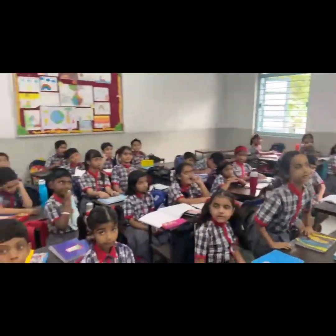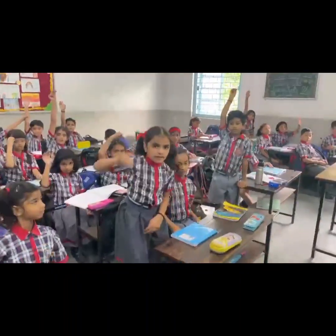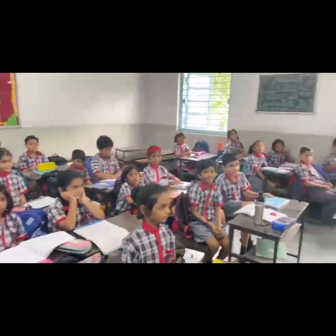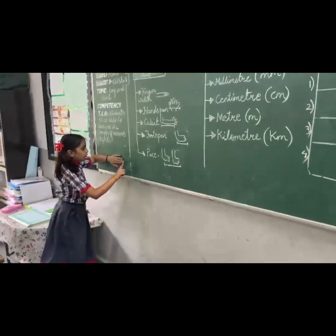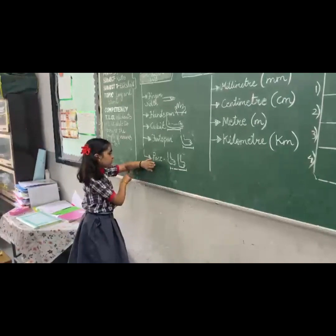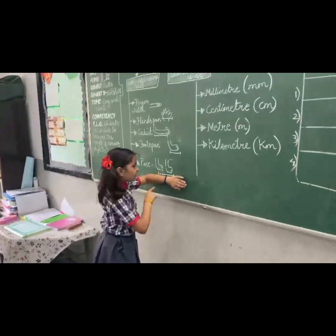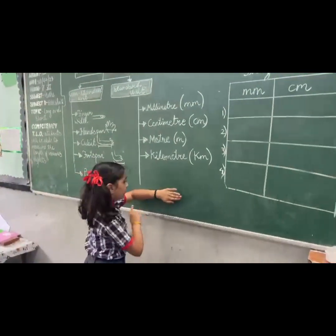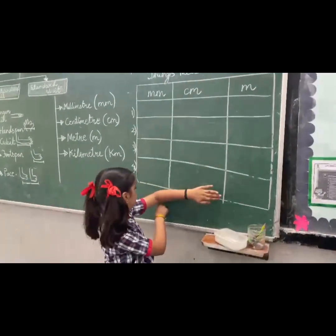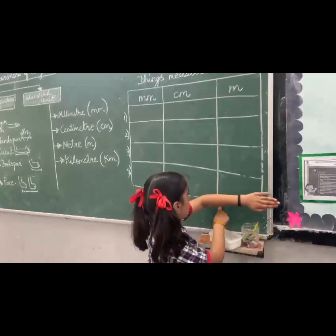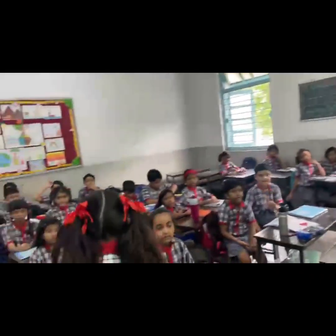Now the third method is? Cubit. Yes, come. Cubit. So measure the length. 1, 2, 3, 4, 5, 6, 7. So 7 cubits.